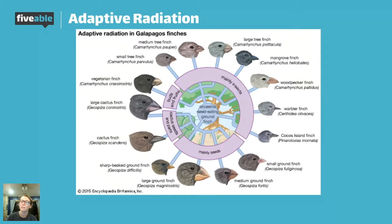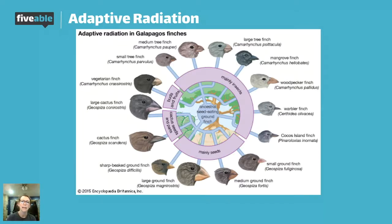The Galapagos finches are a great example of different speciation from a common ancestor. All of these different species have sprung up from a common ancestor based on different environments. The same could be true with the lizard example, or the HHMI example. Anytime you see many different species coming out of a parental species, usually because of a diverse change in habitat, that's adaptive radiation.